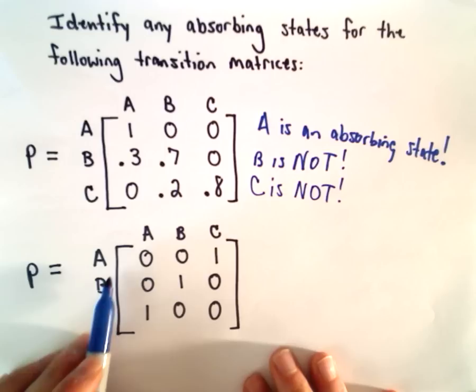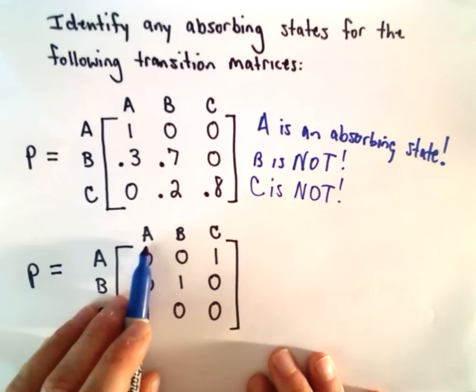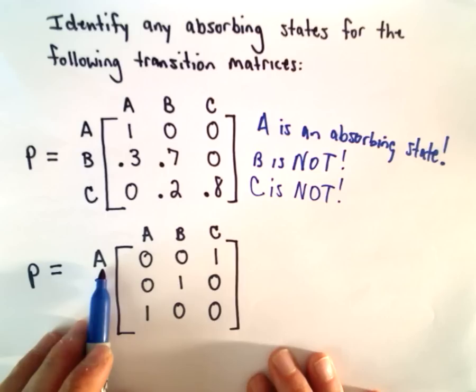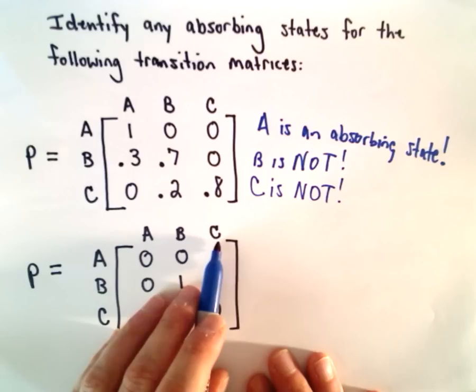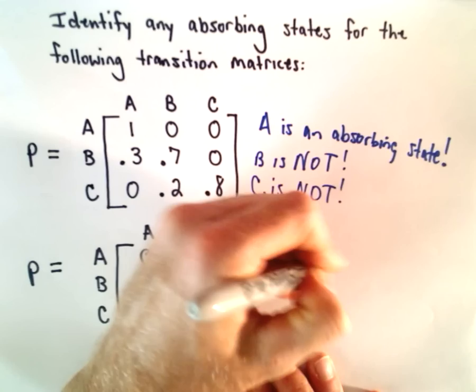For our second example, the same idea. If you start in state A, there's actually a 0% probability that you'll remain in state A, so A is not one of our little black holes here. If you're in A, there's a 0% probability you'll go to B, but there is a 100% probability that you'll go to C. Since you're going from A to C and not staying in the same state, A is not an absorbing state.